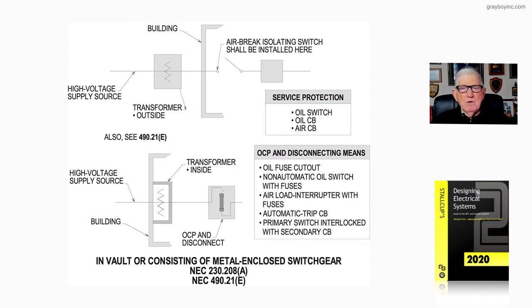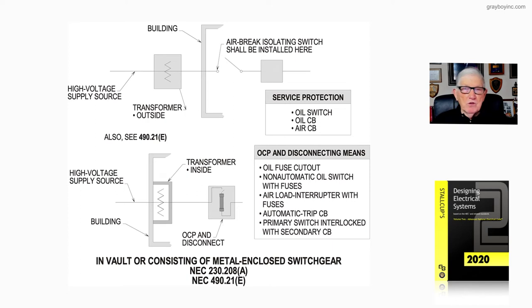In the bottom portion of that illustration, the transformer is inside the building or inside a vault, and we're routing from the transformer to the overcurrent protection and disconnecting means. The overcurrent protection and disconnecting means can consist of an oil-fuse cutout, a non-automatic oil-switch with fuses, an air load interrupter with fuses, an automatic trip circuit breaker, or a primary switch in a lot with a secondary CB. This information can be found in 490.21.